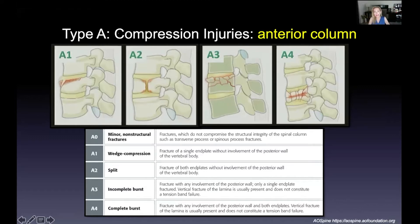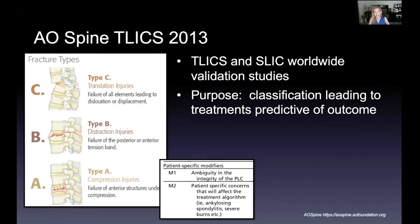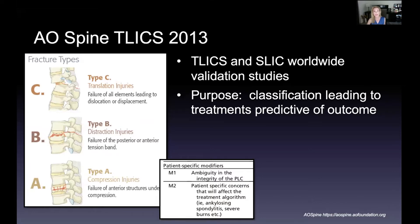A question was asked about whether you only classify at initial injury or repeat it later. The AO Spine classification is done at the time of initial injury — you see the worst first. Is there translation? Is it frankly unstable with motion of one body on another causing cord compromise? If not, you move down to B — is there distraction or posterior or anterior tension band injury?